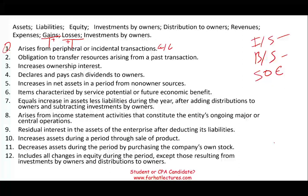Number two: an obligation to transfer resources arising from a past transaction. What element reflects any obligation you have for transferring resources because of something that happened in the past? That sounds like a liability — and this is essentially the definition of a liability. Liabilities increase on the credit side and go on the balance sheet.